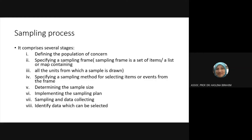Fifth, implementing the sampling plan. This is included in the design — how you plan your sample. If it is homogenous, you can have men, women, children, parents, but it depends on the concept of the research.